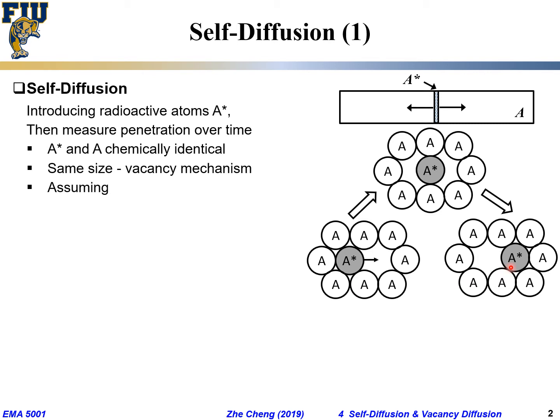Again, within this class it's about model building. From a previous simple model, we can assign a so-called diffusion length from an atom-jumping point of view. On average, we assume A and A-star have the same jumping frequency — the same successful jumping frequency. Whether it's atom A or the radioactive isotope, they should have the same successful jumping frequency.